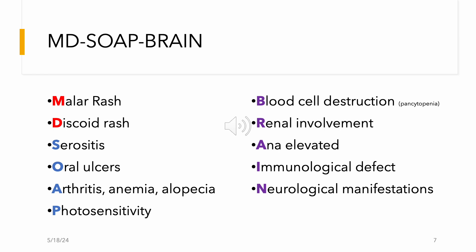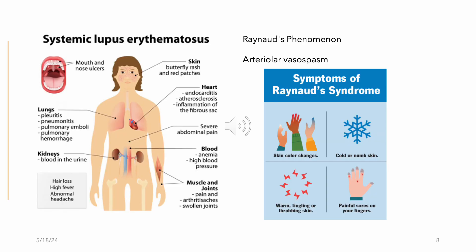Photosensitivity will exacerbate symptoms. B is for blood cell destruction — pancytopenia — because the spleen enlarges and destroys blood cells. Pan means all, cyto means cells, penia means low. R is for renal involvement; people with lupus often develop chronic renal failure. A is for ANA elevated, an immunological defect. I is for immunological defect. N is for neurological manifestations such as confusion.